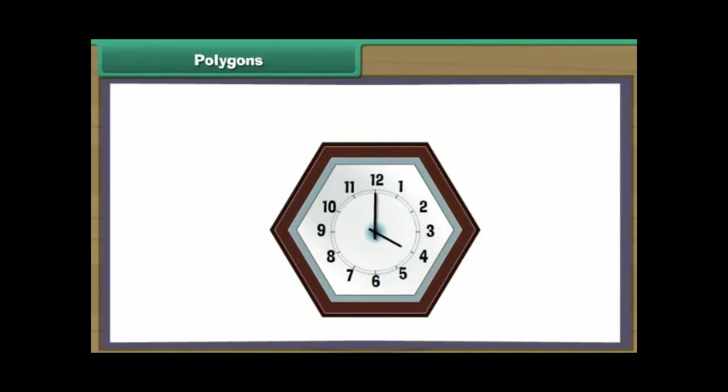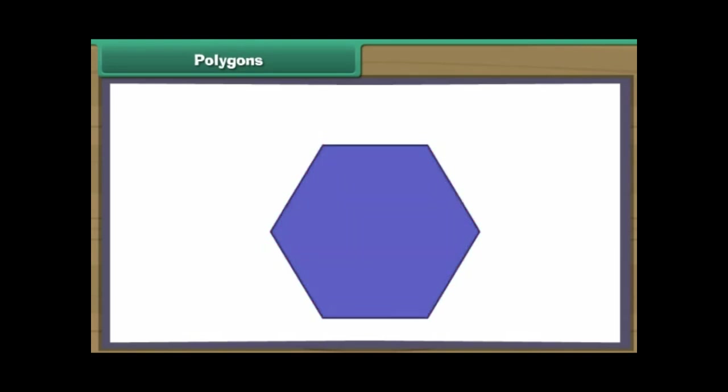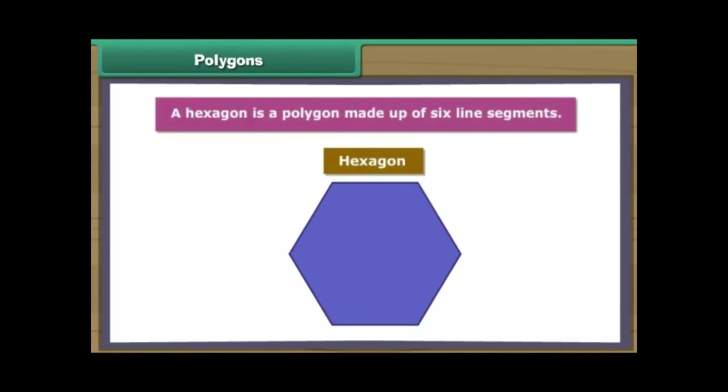Here is a clock. Let us outline its borders. We have a border of six line segments for the clock. A hexagon is a polygon made up of six line segments.